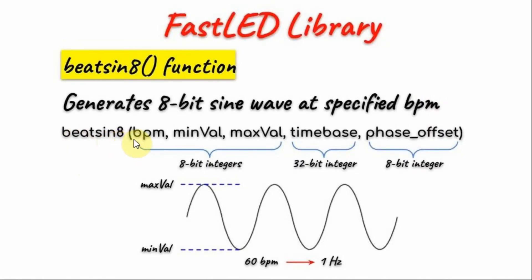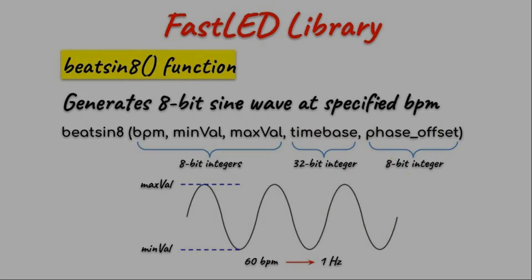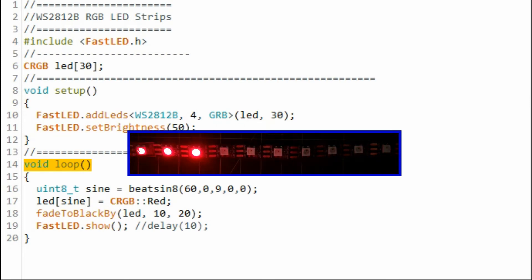The BeatSin8 function has five arguments. BPM determines the frequency of the sinusoid — 60 BPM is equivalent to 1 Hz. Minimum value and maximum value determine the peak-to-peak amplitude of the sinusoid. Time base and phase offset determine the amount of shift along the time axis. In this example, BeatSin8 is used to generate a 1 Hz sine wave that oscillates along the first 10 LEDs of the WS2812B module.